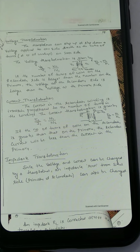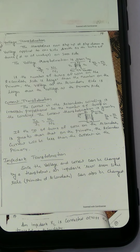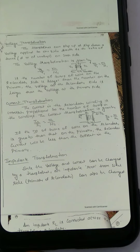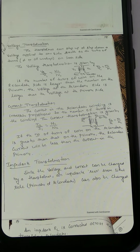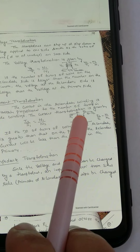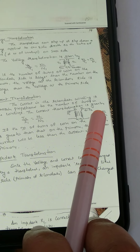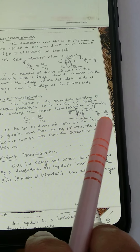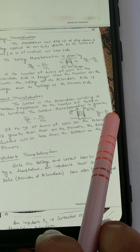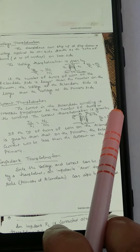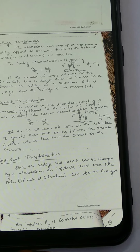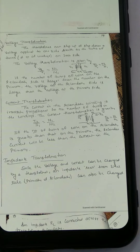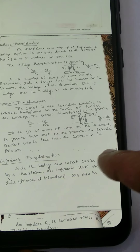For current transformation, the current in the secondary winding is inversely proportional to the number of turns in the winding. So whereas voltage was directly proportional, current is inversely proportional. If I1 is the current in the primary and I2 is the current in the secondary, then I2 by I1 equals N1 by N2. If the number of turns on the secondary is greater than the primary, then the secondary current will be less than the primary current.